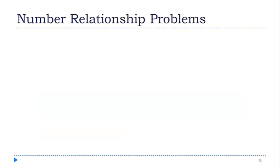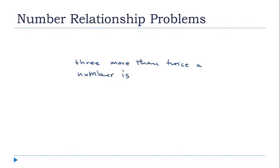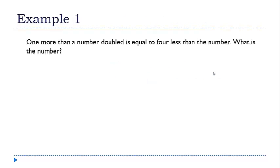What I'm calling number relationships problems are one of the most basic types of algebra word problems. These questions give you information about a number — for example, 3 more than twice a number is equal to the number — and you're asked to find out what the number is. Take a look at this problem.